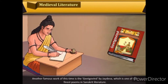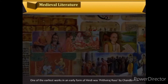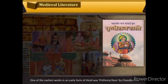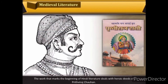Another famous work of this time is the Geet Govind by Jayadeva, one of the finest poems in Sanskrit literature. This was also the period when languages had started developing into modern Indian languages. One of the earliest works in an early form of Hindi was Prithviraj Raso by Chandbardai, which marks the beginning of Hindi literature and deals with the heroic deeds of Prithviraj Chauhan.